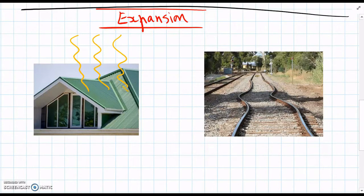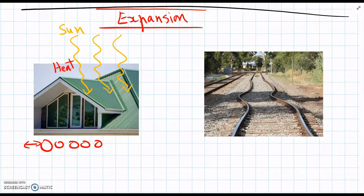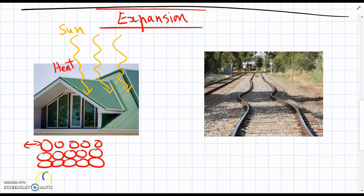So when it's cloudy, the roof, the metal in the roof is quite cool. But then as soon as heat energy from the sun, so the sun sends rays of light and they cause the roof to get hotter, as soon as that happens, the particles in the roof start to vibrate a bit more. They vibrate back and forwards, and that makes the whole roof expand a little bit.